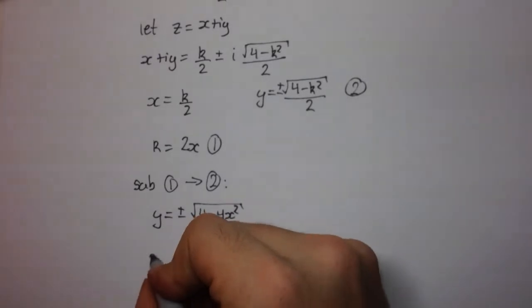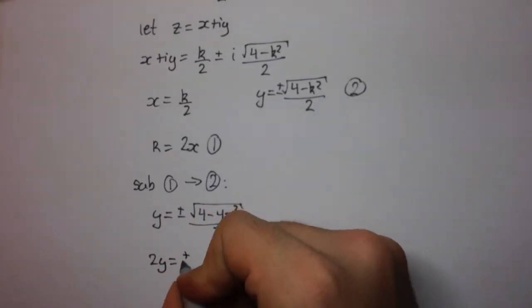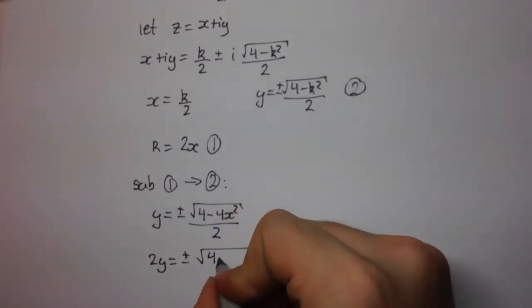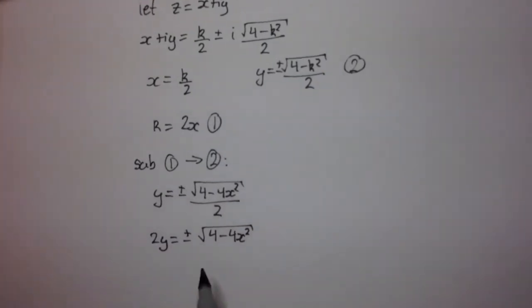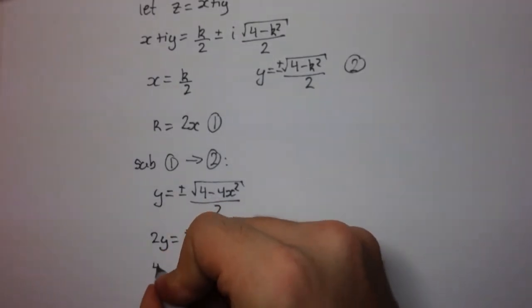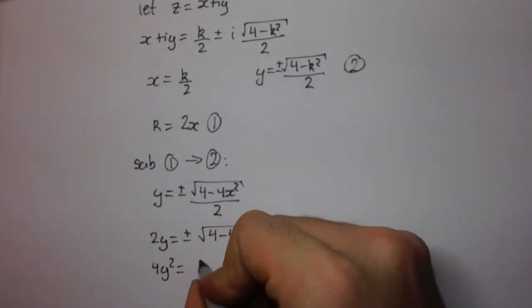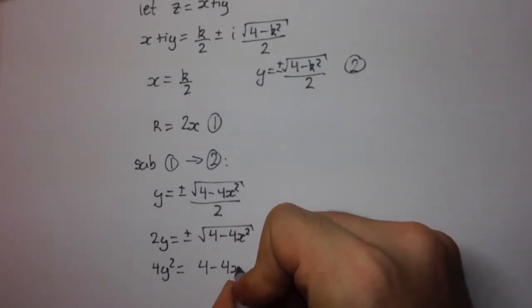Multiply these two up here. We get 2y equals plus or minus the square root of 4 minus 4x squared. Now, we're going to square both sides. And by doing that, we get rid of this plus or minus here. So, we're going to get 4y squared equals 4 minus 4x squared.